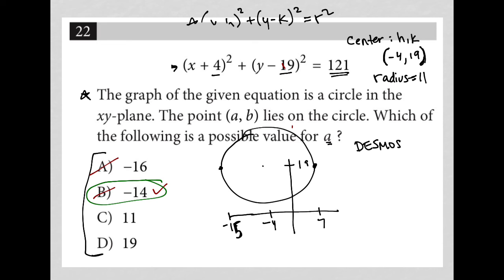Then that's why a negative 16 wouldn't make sense for the circle to touch it. A positive 11 wouldn't make sense for the circle to touch it there. And a positive 19 also would not make sense. The only value that would make sense is negative 14. And it's actually going to touch the circle in two places.